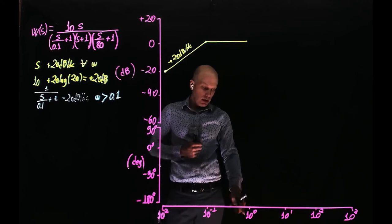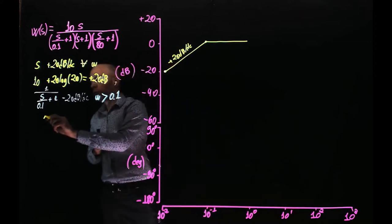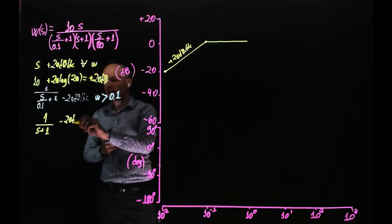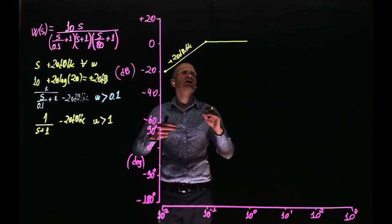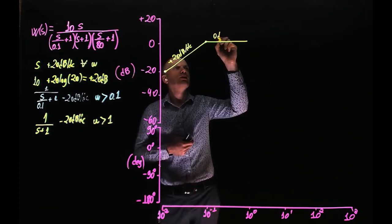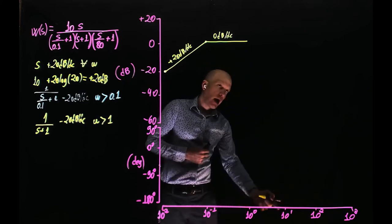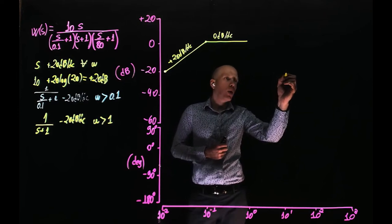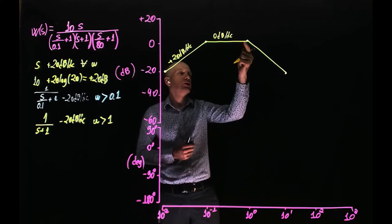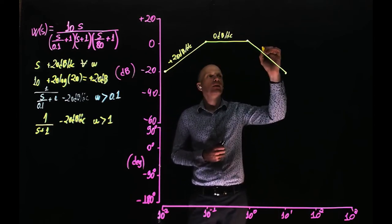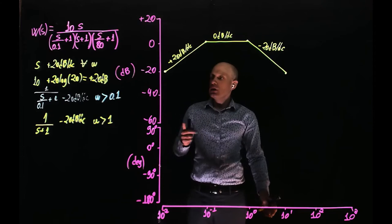The next cutoff frequency is at 1 radian per second, which is the cutoff frequency of another pole. The pole at 1/(S + 1) adds another negative 20 dB per decade when the frequency is greater than 1. Notice that this adds negative 20 dB per decade to the existing slope of 0 dB per decade, so the slope goes down to negative 20 dB per decade now. At 1 radian per second we are at zero; increase the frequency by 10, it goes down by 20. So at 10, we are at negative 20 dB.